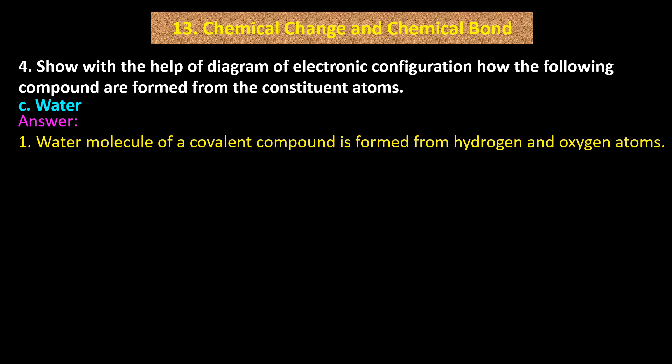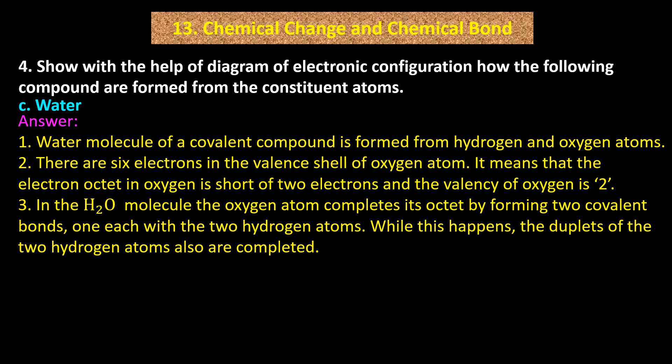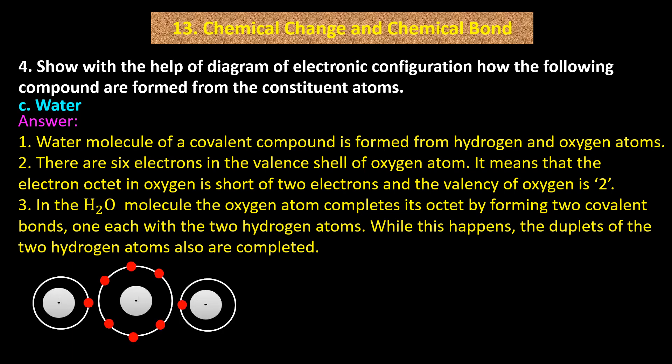C: Water. Answer: A water molecule is a covalent compound formed from hydrogen and oxygen atoms. There are six electrons in the valence shell of the oxygen atom, meaning the electron octet in oxygen is short of two electrons and the valency of oxygen is two. In the H2O molecule, the oxygen atom completes its octet by forming two covalent bonds, one each with two hydrogen atoms.